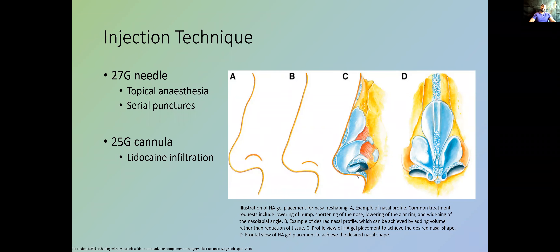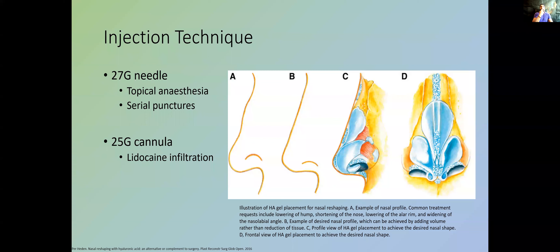You can see the HA placed above the dorsal hump and beneath it, with some at the tip for a subtle ski slope, and some at the base of the nasal spine. That injection at the base of the nasal spine tends to be a little sore. You're not creating a new nose — you're creating an illusion that on profile the tip is running upward. Adding product at the base of the nasolabial angle, deep, pushes the skin out so the nose appears to run superiorly. It's an illusion.